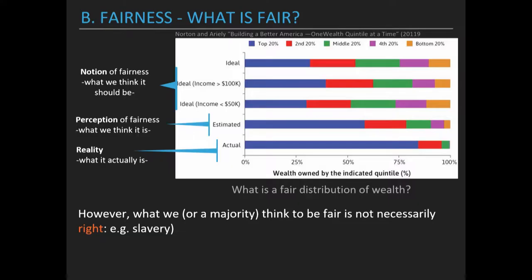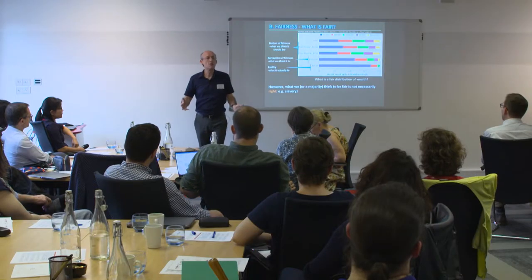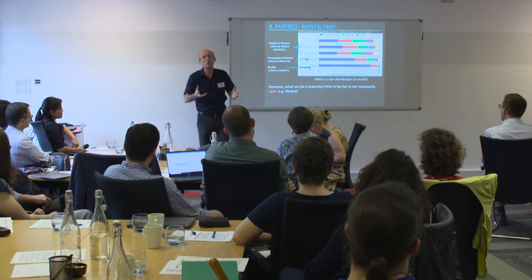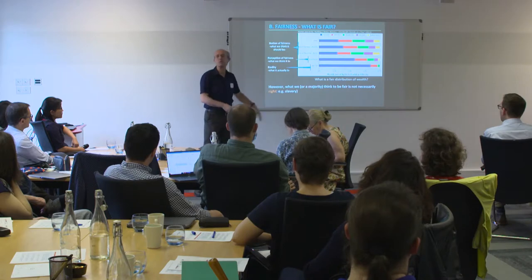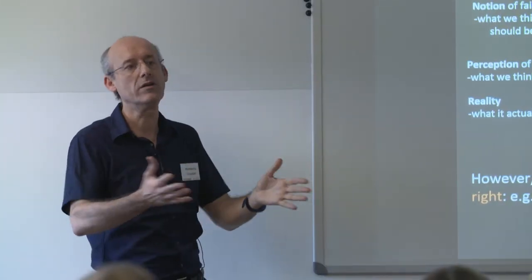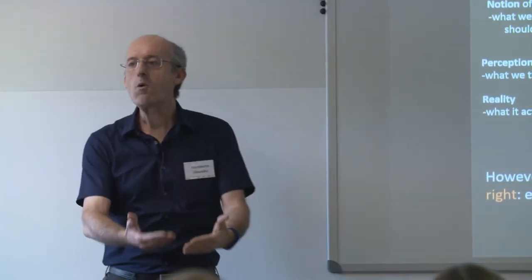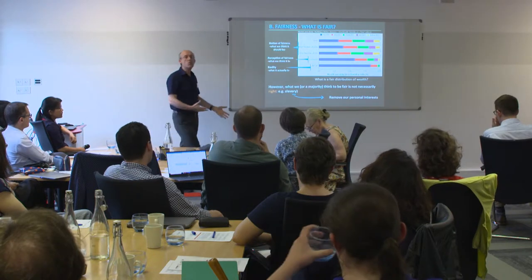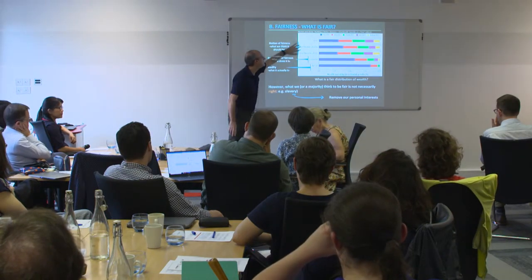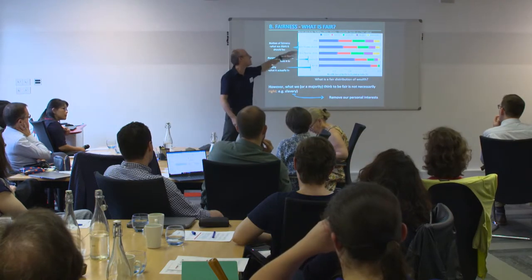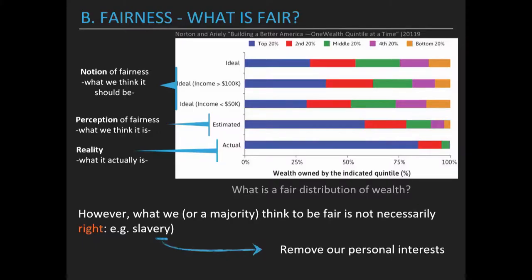What we think should be fair doesn't make an outcome fair. The example I like is slavery — there was a period in time where if you asked people whether slavery was right, a majority who had a voice accepted it, but this didn't make slavery right. So how can we get a concept of what is fair? Ideally, we would like to remove our personal interest. This is why we may have different concepts of fairness — depending on our position, we have different personal interests.